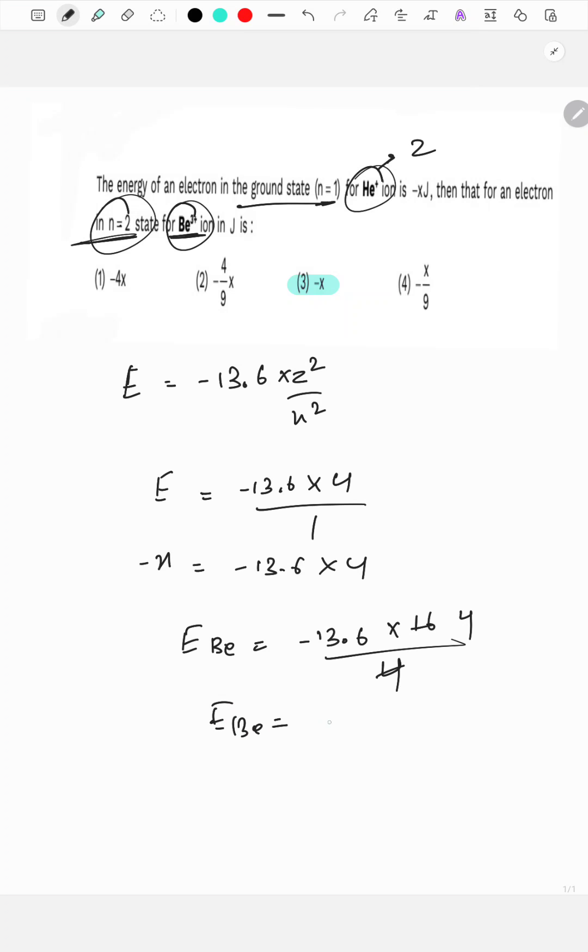Now energy of beryllium equals minus 13.6 into 4. Seeing this 4 here and here, we can say that energy of beryllium equals minus x. So option 3 will be your answer.